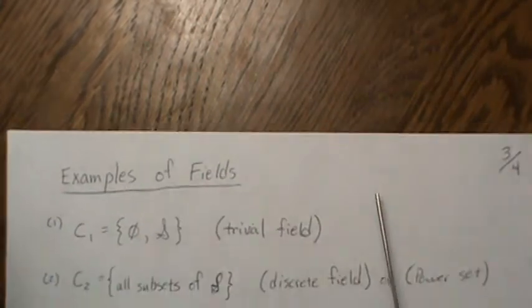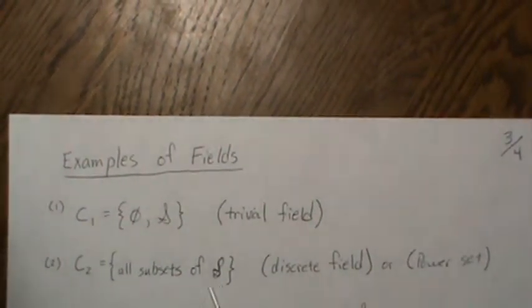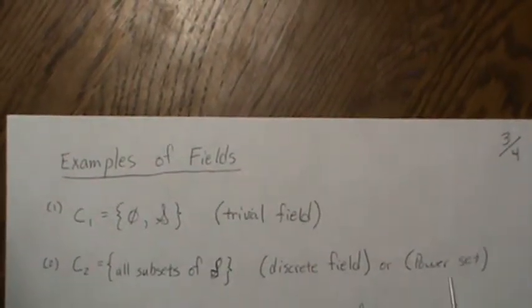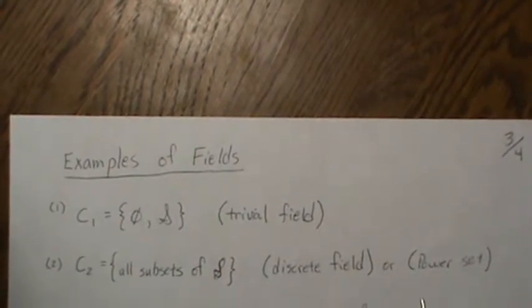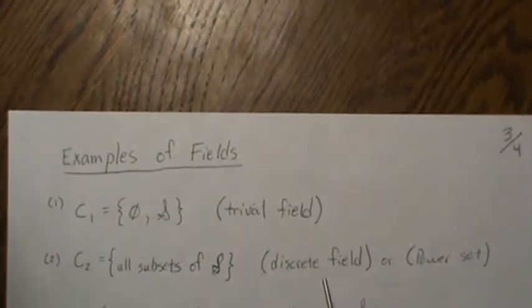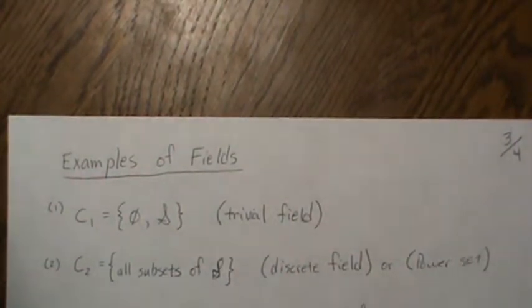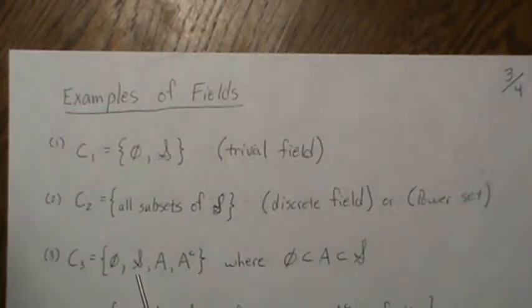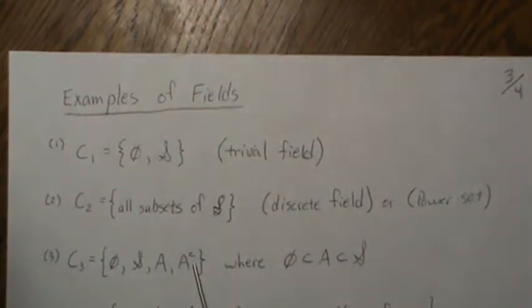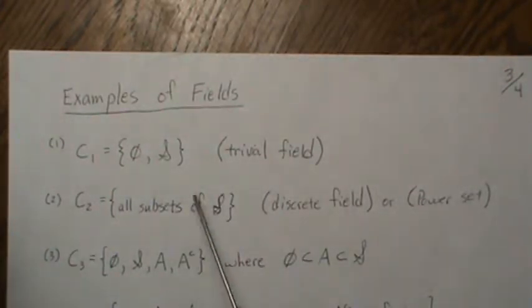Let's look at some examples — we call them classes of subsets of the sample space. Class C1 has only two elements and is called the trivial field. Class C2 is all possible subsets of the sample space, called the power set or the discrete field depending on whether you're a mathematician or a statistician. Class C3 is also a field, with four elements: the empty set, the sample space, a set A, and a set C. To prove these are fields, you verify they meet the three properties — and all three of these do.